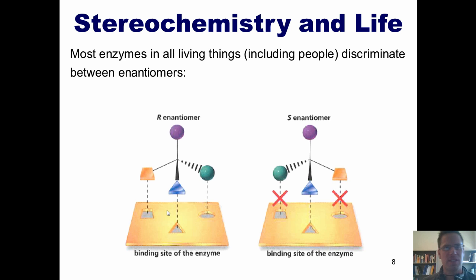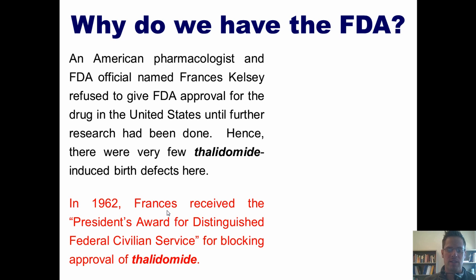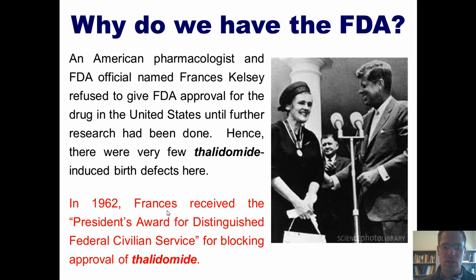Now, as sad as this story is, there is sort of a silver lining to it. During the time that thalidomide was being used as a medicine in Europe and in northern Africa, an American pharmacologist and FDA official named Frances Kelsey refused to give FDA approval for the drug in the United States until further research had been done. Because of that, thalidomide distribution in the United States was limited, and as a result, there were very few thalidomide-induced birth defects here. In 1962, Frances Kelsey received the President's Award for Distinguished Federal Civilian Service for blocking approval of thalidomide. This is a photograph of her receiving that award from President John F. Kennedy. This is a classic example of one of the major reasons why an FDA is important. Having an FDA, with all of its contingent screening requirements for developing medicines, helps to ensure that the medicines that we use and buy in the United States have limited and known side effects.